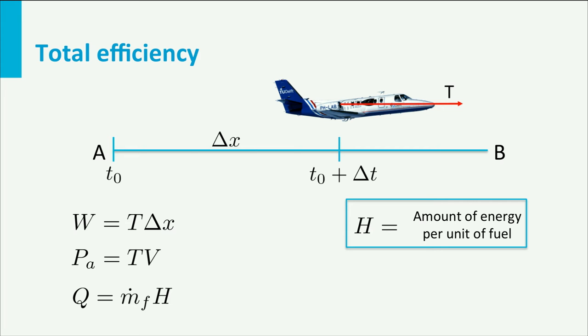The total efficiency of the propulsion system can be defined as the ratio between power available, which is our end goal to fly from A to B, and the thermal power. So essentially the energy we put into the process is Q. Unfortunately this efficiency is always smaller than 100%. But why is this actually the case?